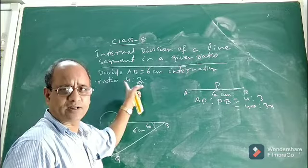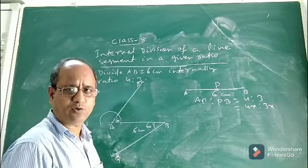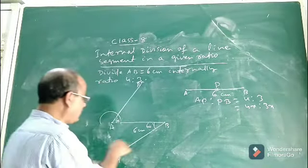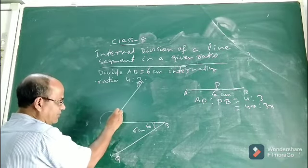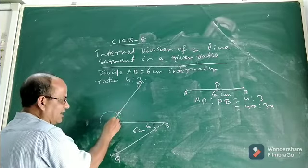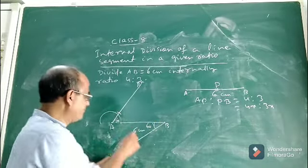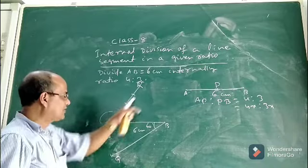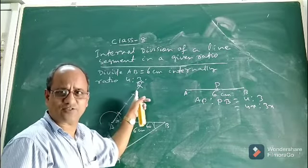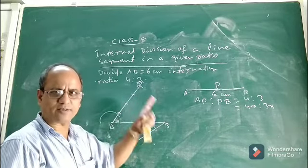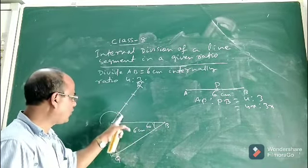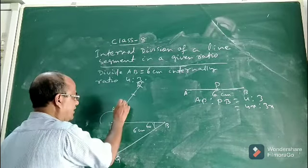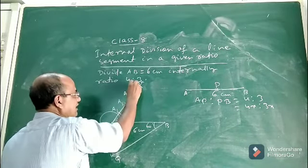The next step: keep the rounder at vertex A, take any suitable arc length and cut one part. Don't change the arc length — cut the second part, third part, and fourth part. That means you cut four equal arcs along this ray taking A as center. An arc is a part of a circle. Name these points A1, A2, A3, and A4.